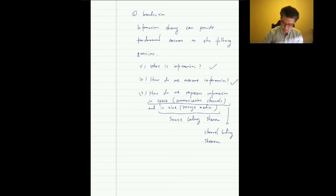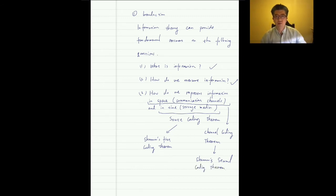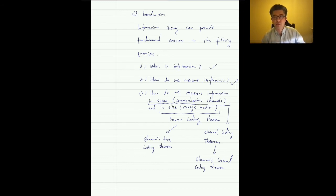The source coding theorem is usually called Shannon's first coding theorem, and the channel coding theorem is usually called Shannon's second coding theorem. The first tells us how to store information efficiently, and the second tells us how to transmit information reliably.